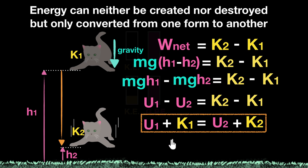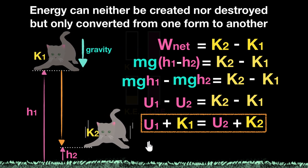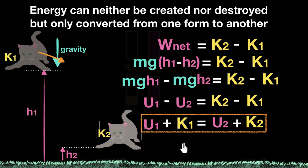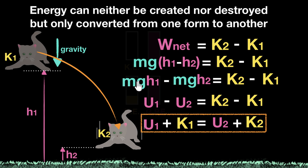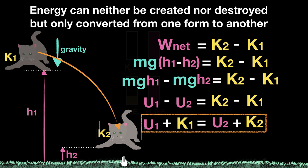Even if I hadn't dropped the cat straight down, but threw it sideward such that it went in some curved motion, this equation is still valid. Why? Because the work done by gravity does not depend on the path — it only depends upon the height difference, which is still h1 minus h2. So even in such complicated motion, the total energy here equals the total energy over there. It might be difficult to think in terms of forces and accelerations, but thinking in terms of kinetic plus potential is much easier to solve.